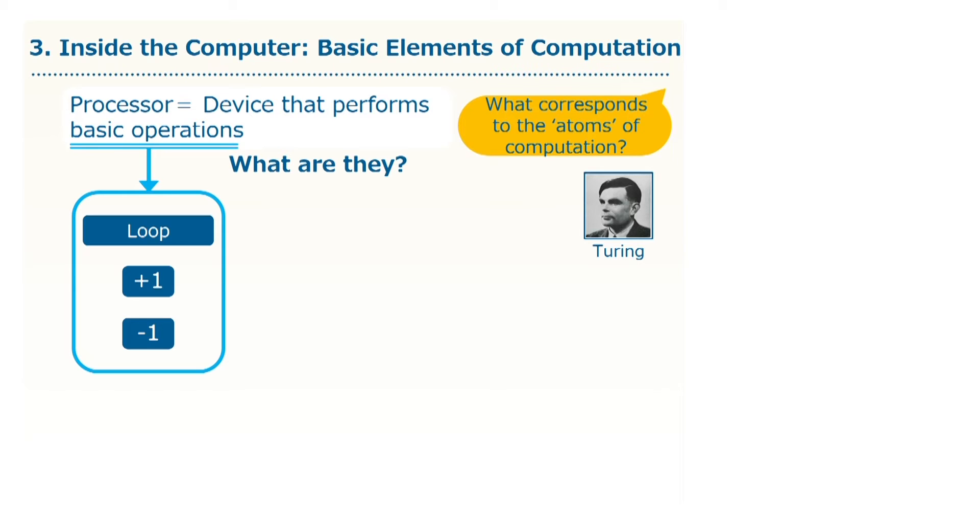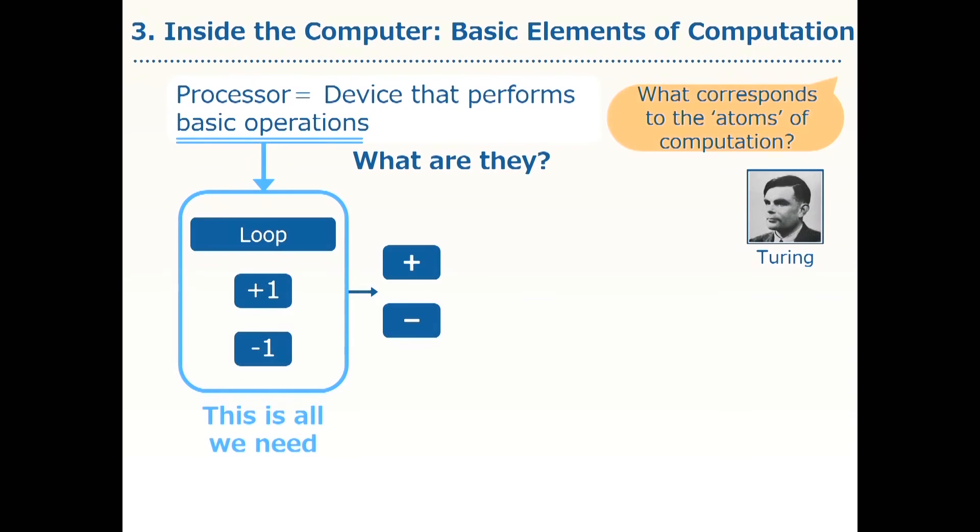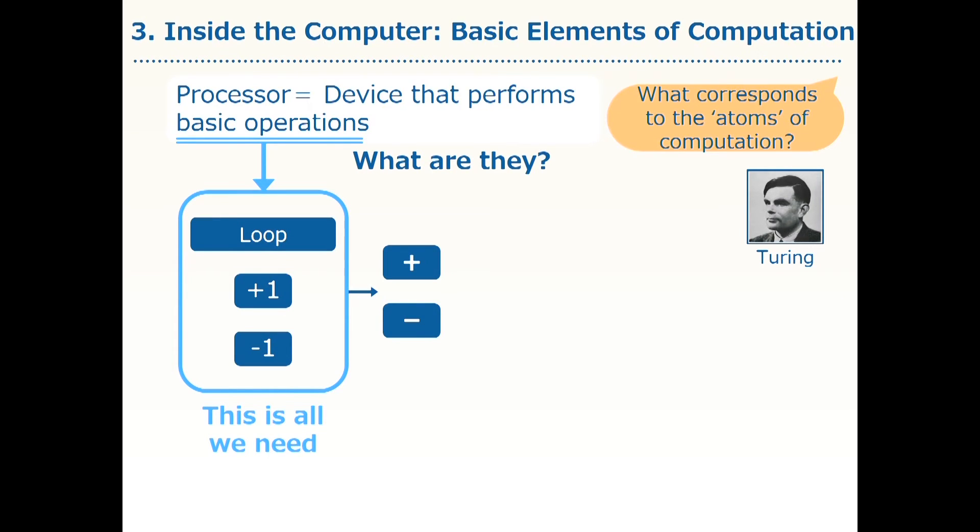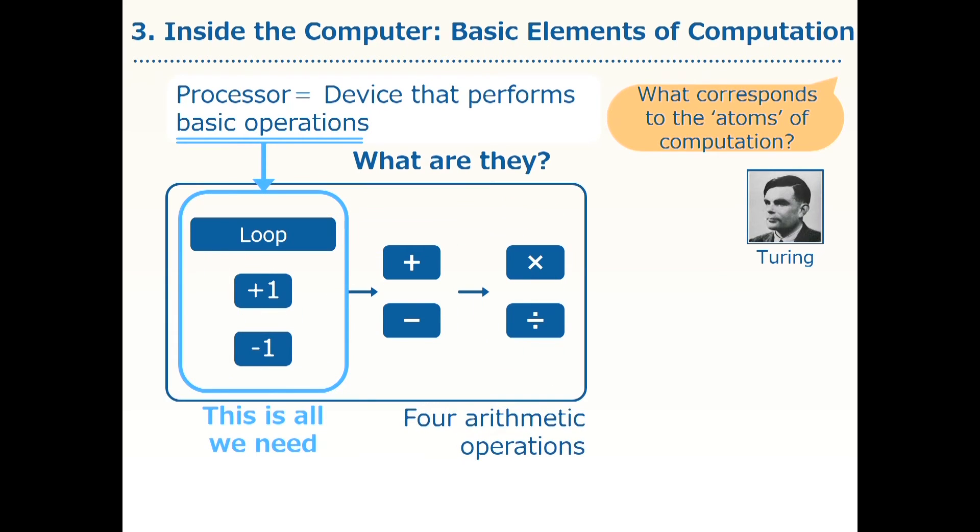We will see this later, but the action consisting of certain repetitions of plus one and minus one makes it possible to do addition and subtraction calculations. Further, combining addition and subtraction lets us do multiplication and division calculations. Therefore, we can then calculate with four arithmetic operations.